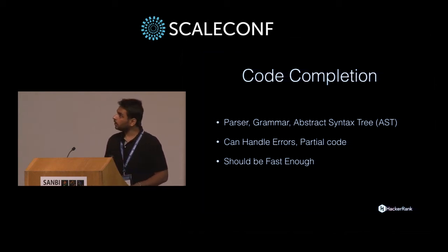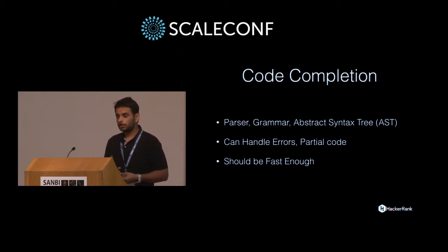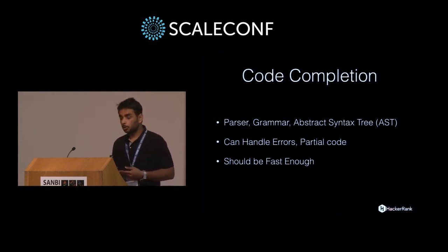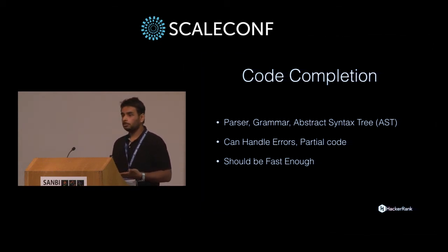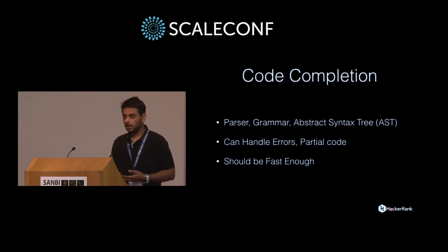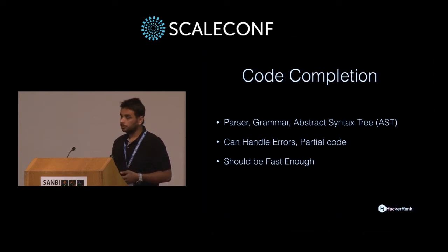Parsers in compilers are very strict — when you pass code to your parser, they will raise an error if there is something wrong with the syntax. But for code completion, the user is writing partial, incomplete code. So what you need is a parser with error recovery, so it can handle errors and parse code that is incomplete. The parser also needs to be fast enough, because if completion takes more than 200 milliseconds, it will be very slow for the user. We need to make sure completion is under 100 milliseconds.